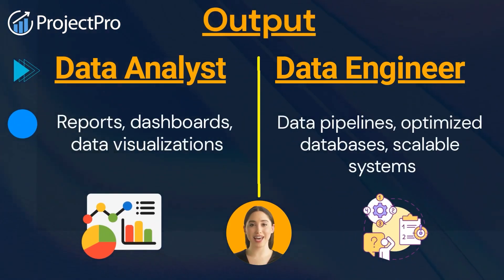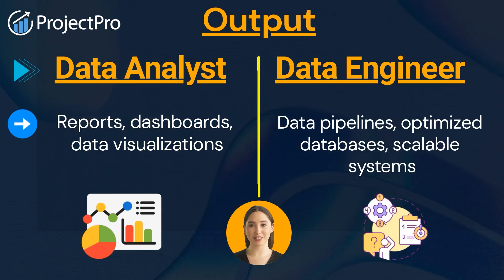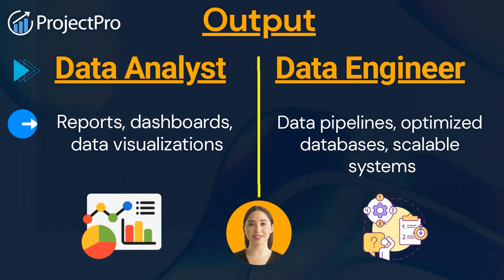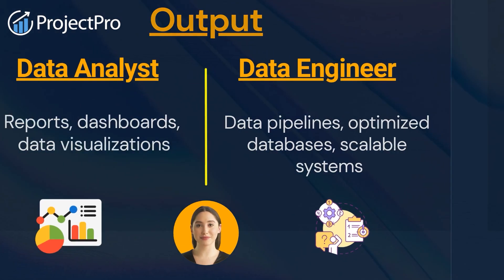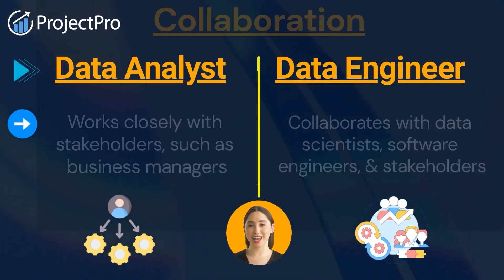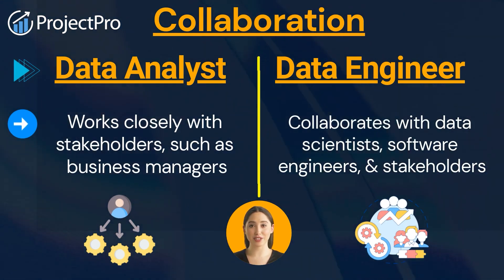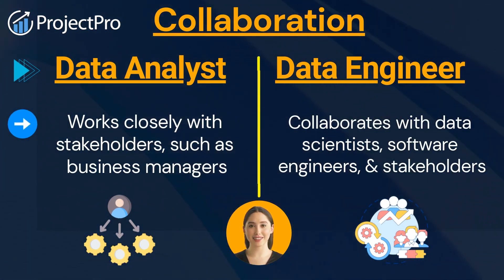The output of data analysts are reports, dashboards, and data visualizations. And the output of data engineers are data pipelines, optimized databases, and scalable systems. The data analyst collaborates with stakeholders such as business managers, while the data engineer collaborates with data scientists, software engineers, and stakeholders.